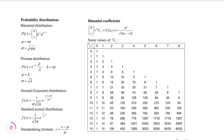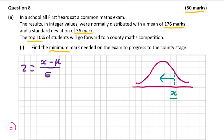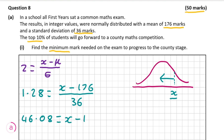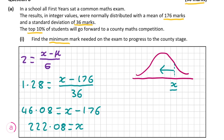We also need the standardizing formula from the logbook, which states that our z score is equal to x minus our mean divided by our standard deviation. So z = 1.28, mean = 176, standard deviation = 36. We multiply both sides by 36 to eliminate the denominator, then add 176 to both sides to solve for x, giving us x = 228.08.